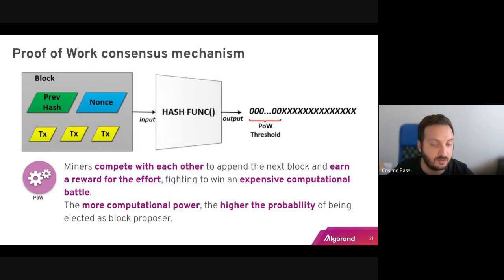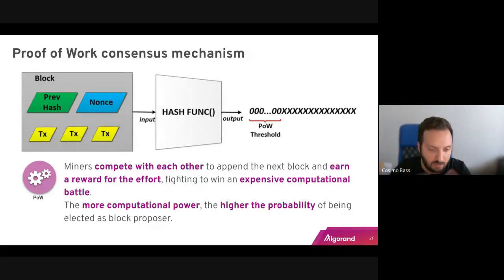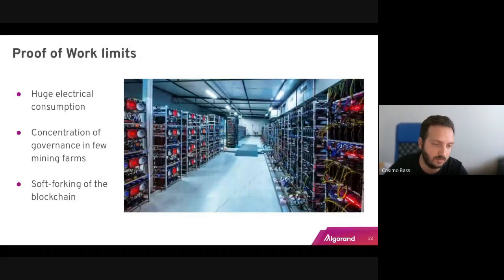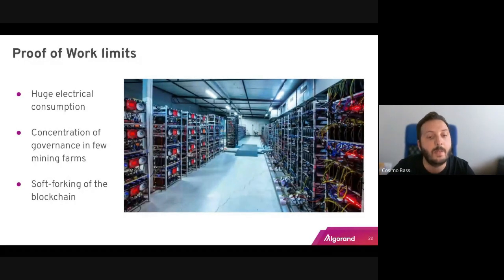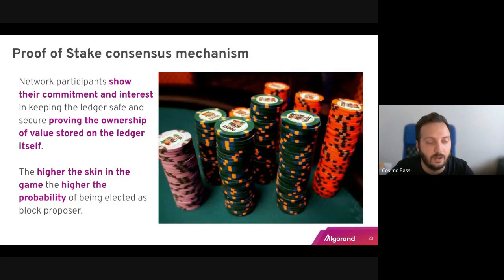Historically, blockchains proposed several consensus mechanisms. The first was Proof of Work, a very early consensus mechanism in which miners compete to append the next block by wasting a lot of energy and computation — whoever first solves a hard problem is allowed to append the new block. The problems with this approach are huge electrical consumption, concentration of power in the hands of a few mining farms, and an inability to avoid soft forks in the ecosystem.